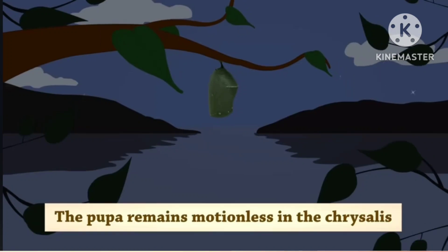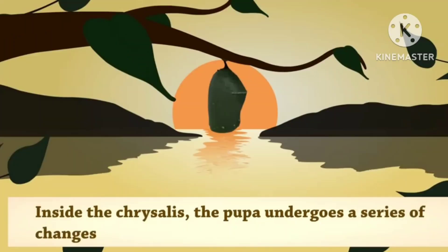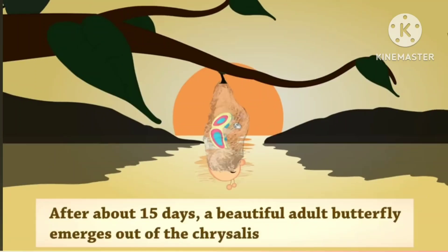The pupa remains motionless in the chrysalis. Inside the chrysalis, the pupa undergoes a series of changes. After about 15 days, a beautiful adult butterfly emerges out of the chrysalis.